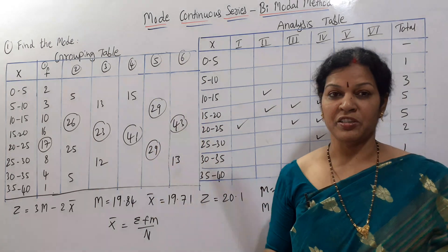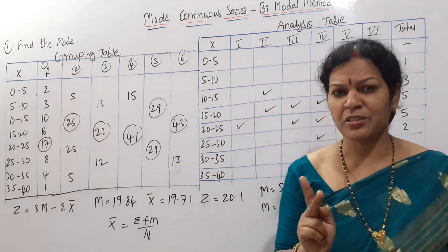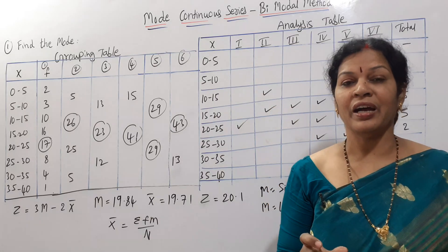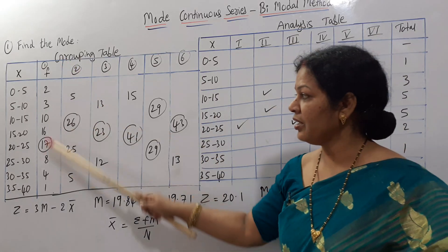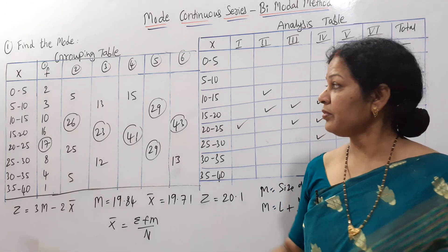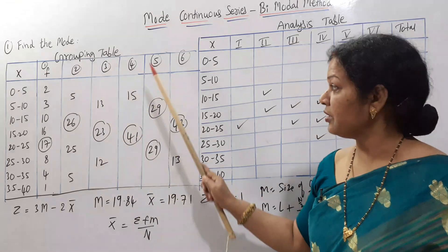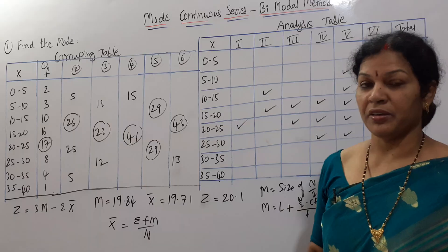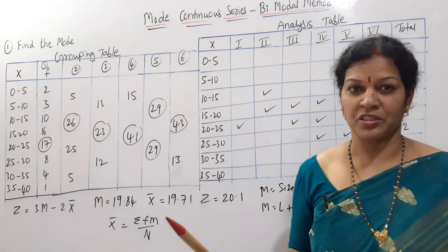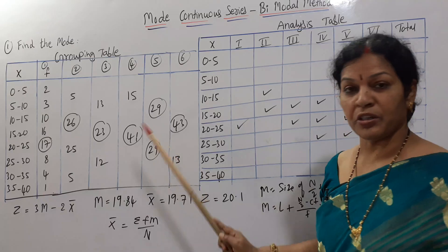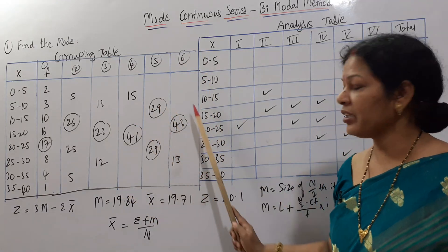Now we proceed to the analysis table as the next immediate step. We identify the highest number in each column. The highest in column 1 is 17; column 2 is 26; column 3 is 23; column 4 is 41; column 5 is 29; column 6 is 43, which is the highest.